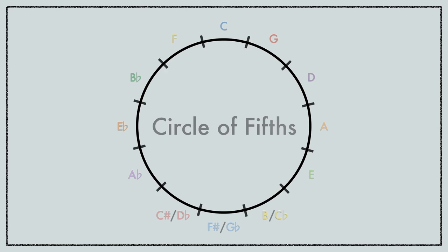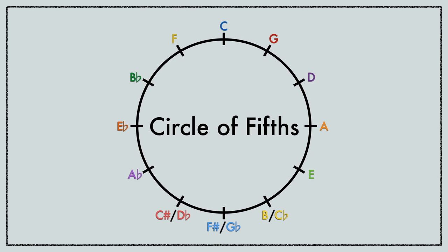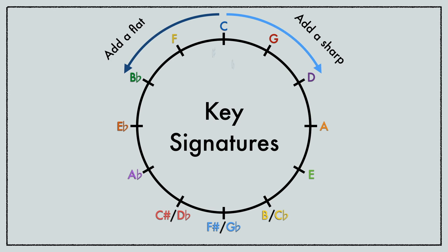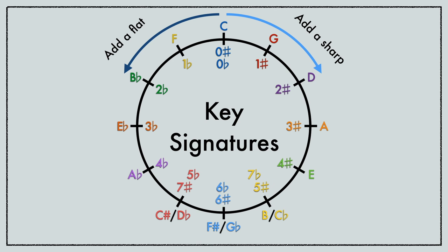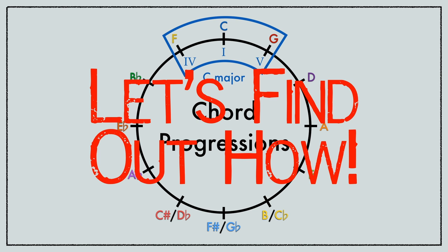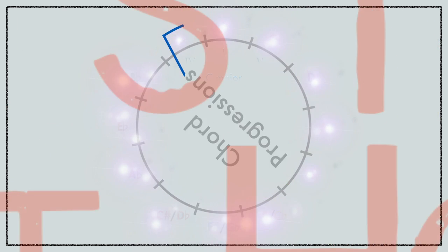This is a circle of fifths. It has many uses. For example, it can help us map standard key signatures by numbers of sharps and flats. It can also help us create chord progressions. Let's find out how.